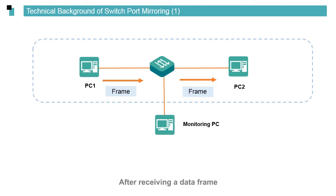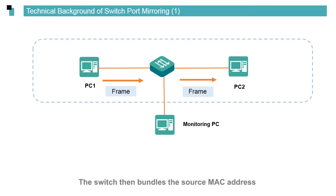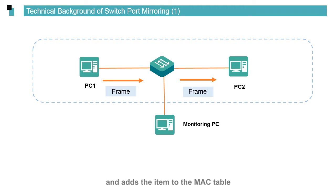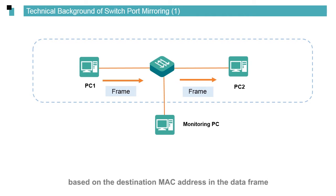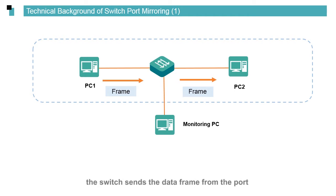After receiving a data frame, a switch inspects the header of the frame to learn the source MAC address. The switch then bundles the source MAC address with the port that receives the data frame as an item and adds the item to the MAC table. Then the switch searches the MAC table based on the destination MAC address in the data frame. If a matching MAC item exists in the MAC table, the switch sends the data frame from the port associated with the item. This behavior is called switching.